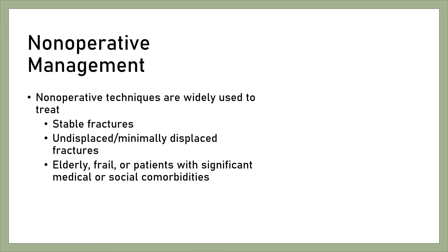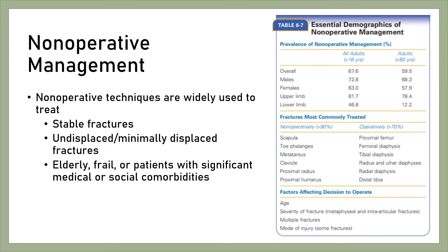Non-operative techniques are widely used to treat stable fractures, undisplaced or minimally displaced fractures, or elderly, frail, or patients with significant medical or social comorbidities. Table 6 shows that there is a significant difference between upper and lower limb fractures, with 81.7% of upper limb fractures and 46.8% of lower limb fractures being treated non-operatively.